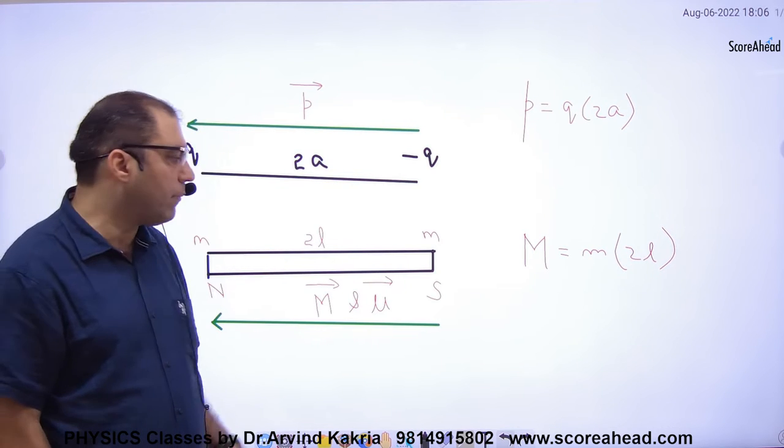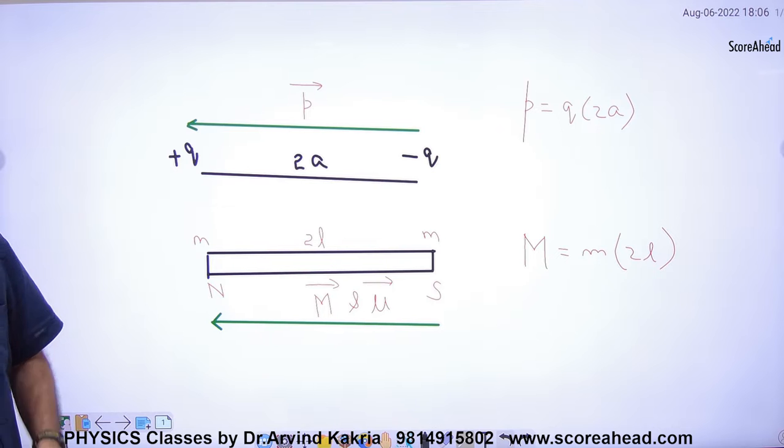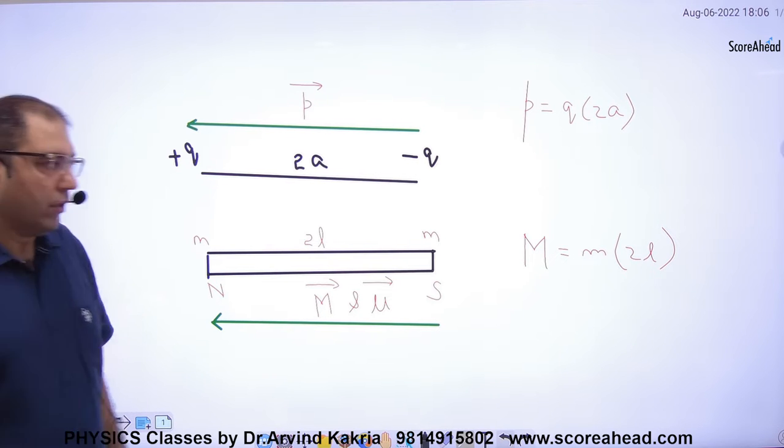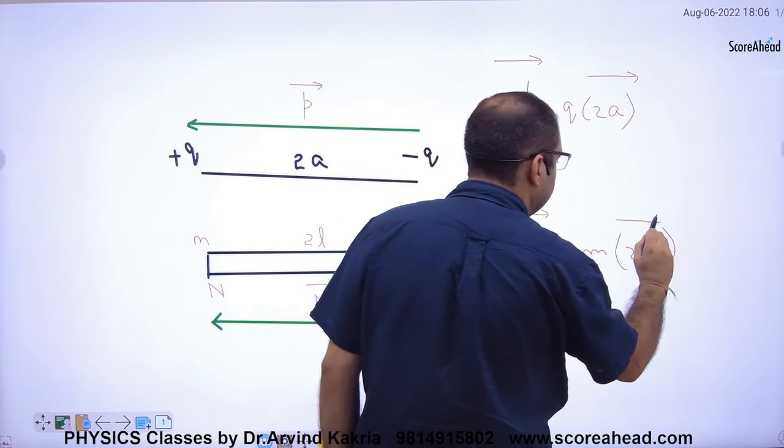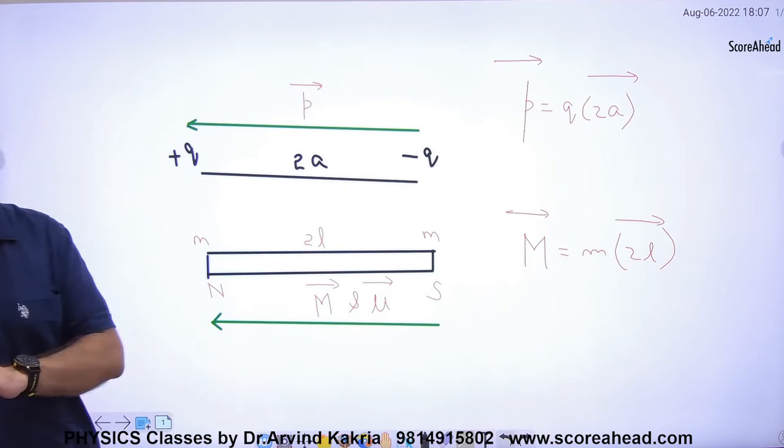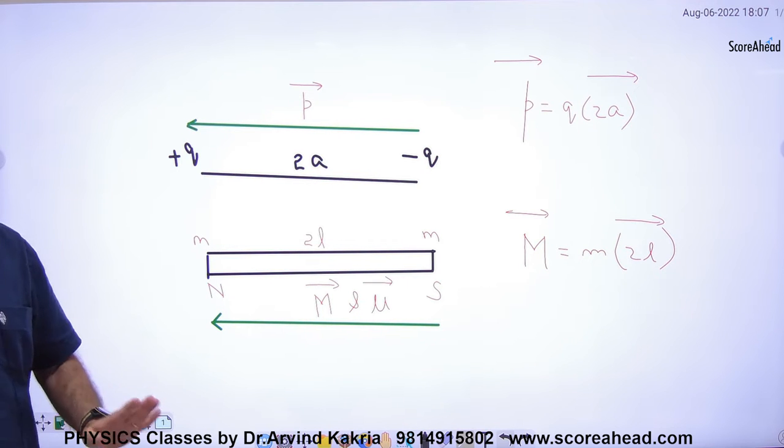Jo kaam uspe q karega, woh kaam uspe chota m karega. This is a vector quantity, this is again a vector quantity. Bilkul same tarike se, magnetic dipole kaam karega hai jaise electric dipole karta hai.